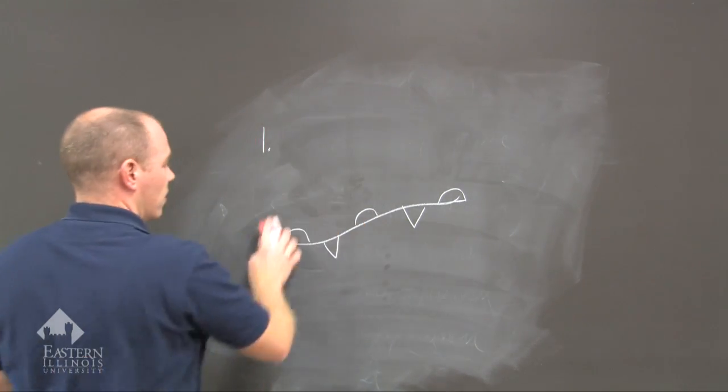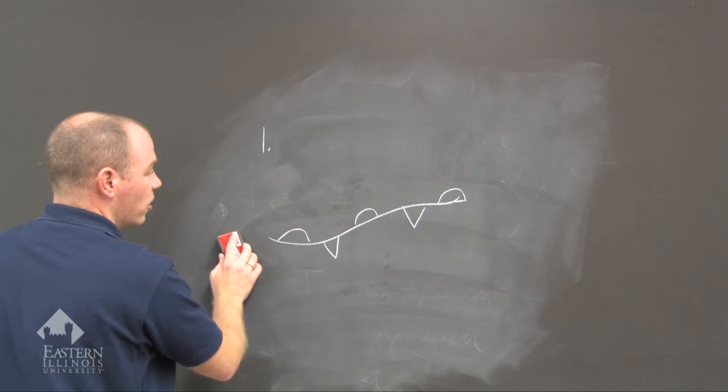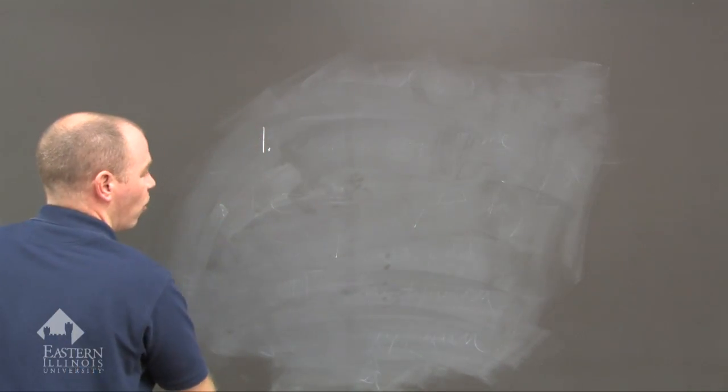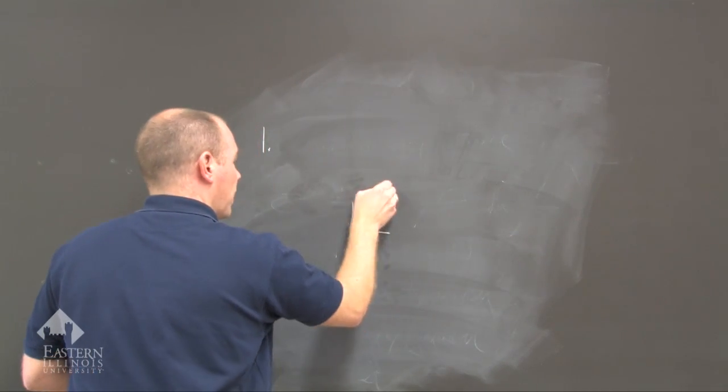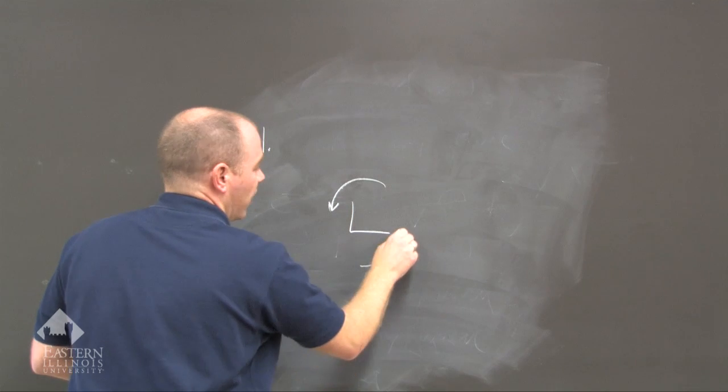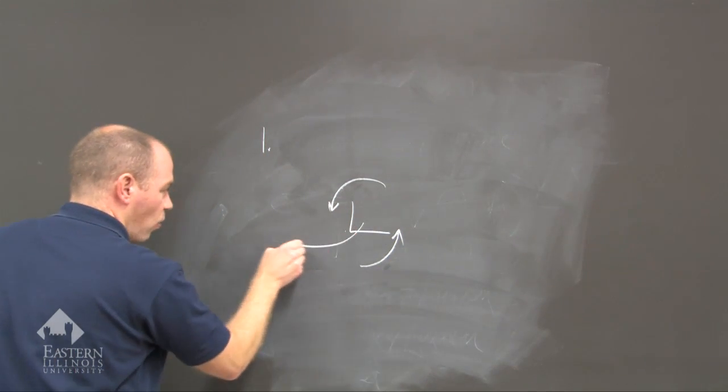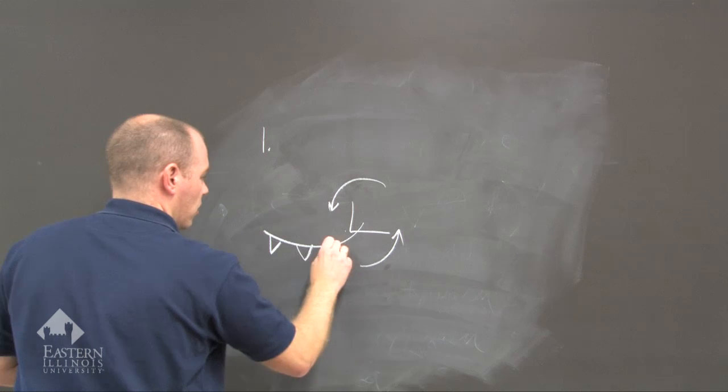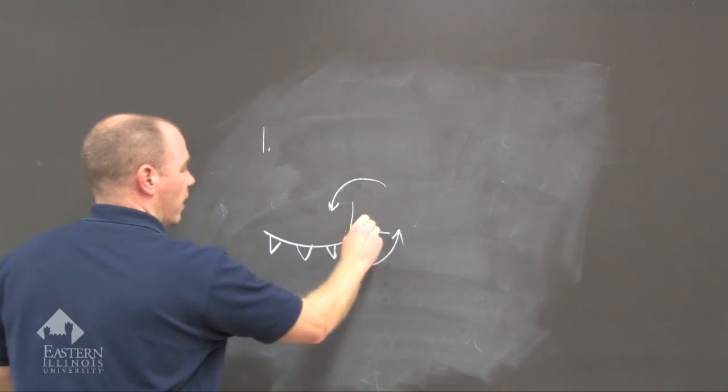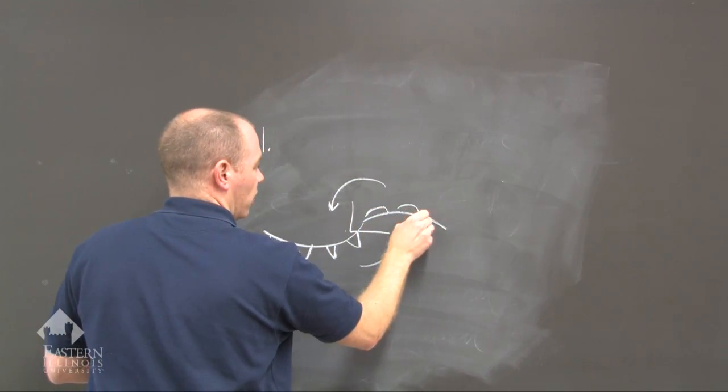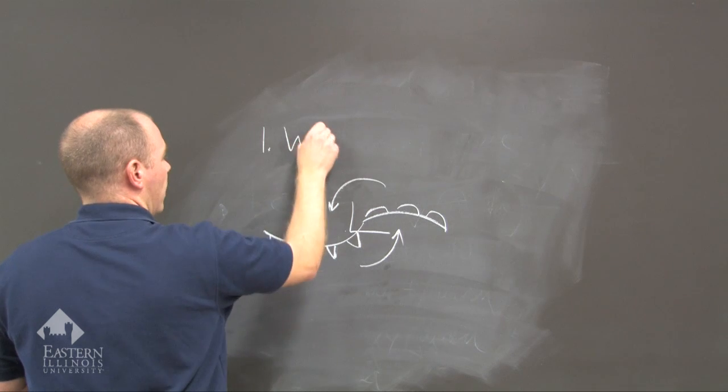The next stage, we take this stationary front and we start to insert a low pressure over the top of it. It begins to spin the air. Therefore, we get a cold front to the west of the low and a warm front to the east of the low. And we call this the wave stage.